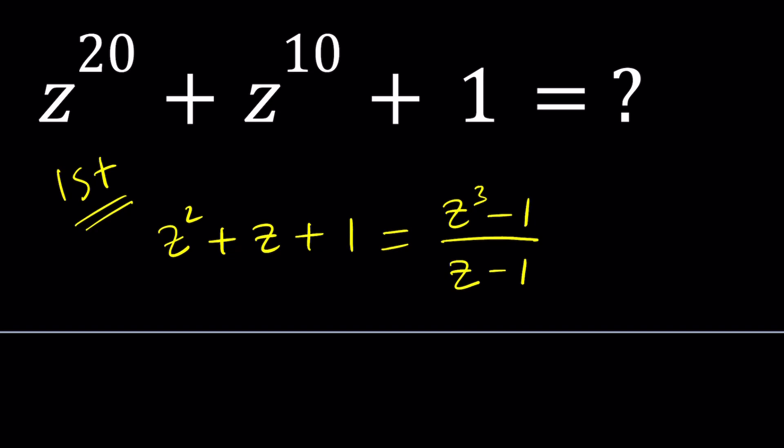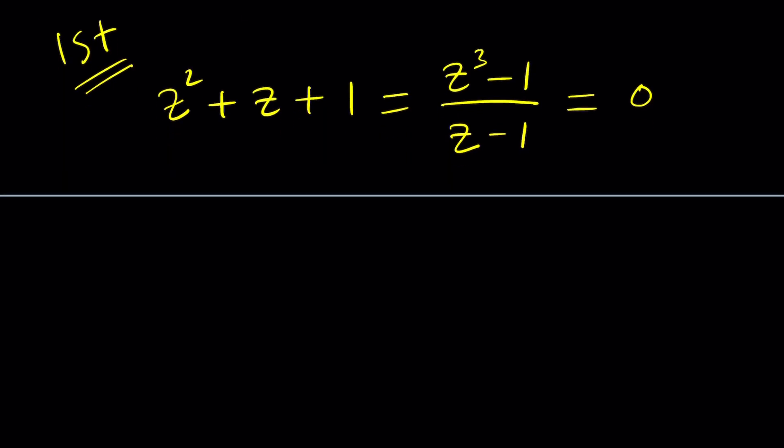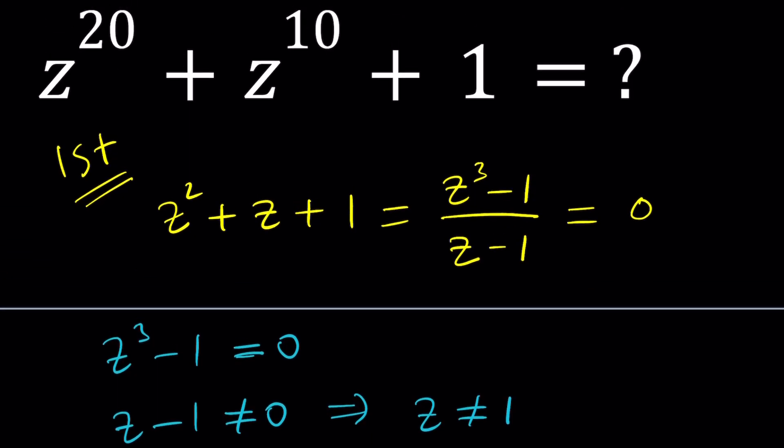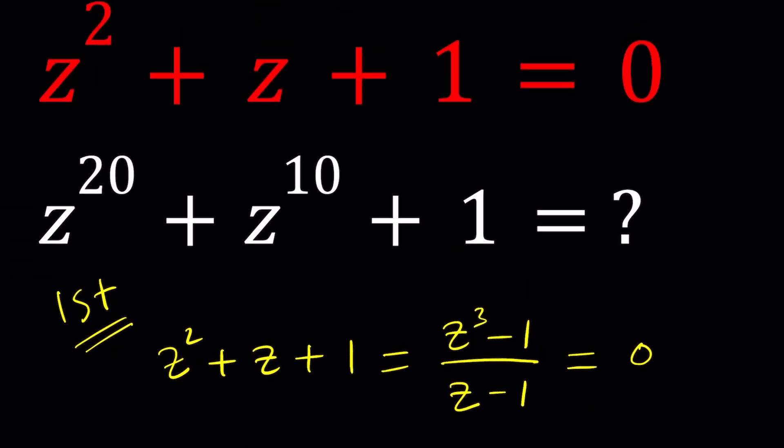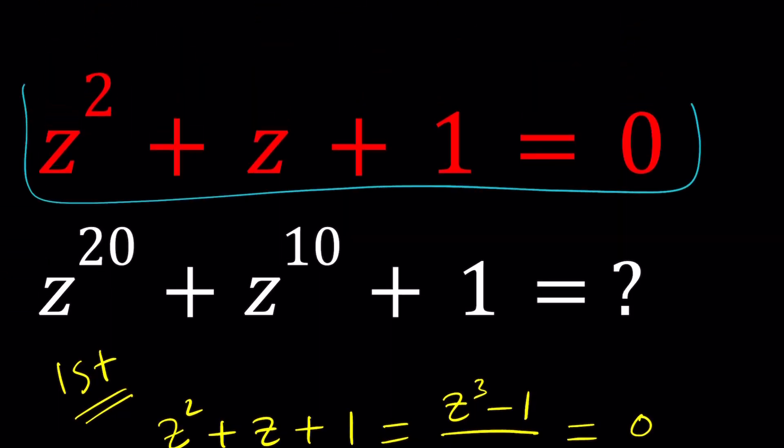Now, we're going to set this equal to 0 and that implies the numerator is supposed to be 0, so z³ - 1 = 0 but at the same time, z - 1 does not equal 0. What does that imply? It means that z cannot equal 1. And I think we know that, because if z equals 1, this equation is not going to be satisfied. 1 + 1 + 1 does not equal 0.